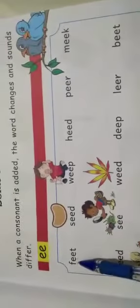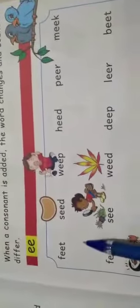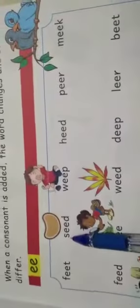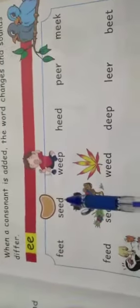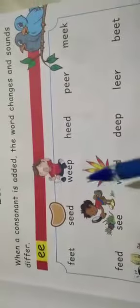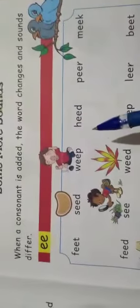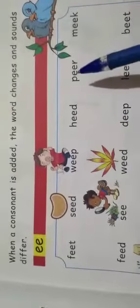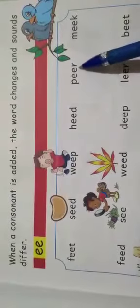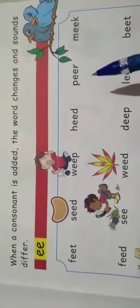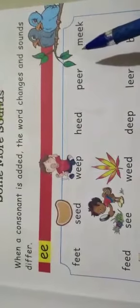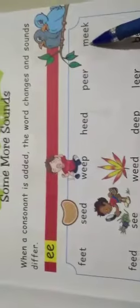F-double-e-t: feet. S-double-e-d: seed. W-double-e-p: weep. H-double-e-d: heed. Next word — P-double-e-r: peer. M-double-e-k: meek.